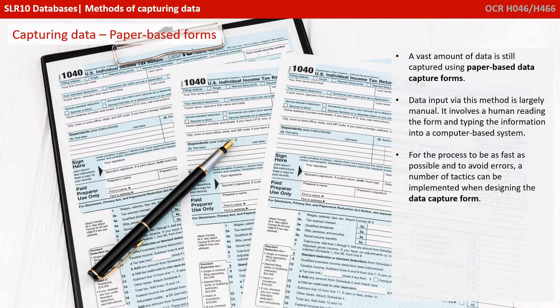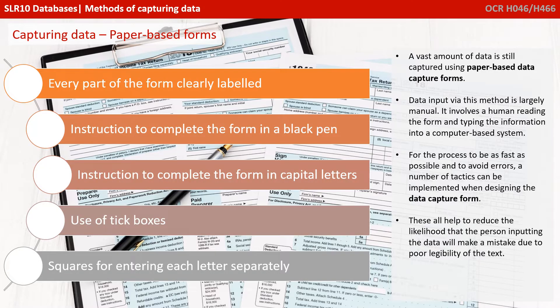Let's start with capturing the data. A vast amount of data is still captured using traditional paper-based data capture forms. Data input via this method is largely manual — it involves a human reading the form and typing the information into a computer-based system. To make the process as fast as possible and avoid errors, a number of tactics can be implemented: every part of the form clearly labeled, instructions to complete the form in black pen, capital letters, use of tick boxes, and possibly squares for entering each letter separately. These features help reduce mistakes caused by poor legibility.